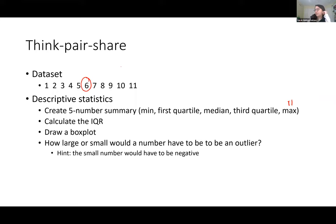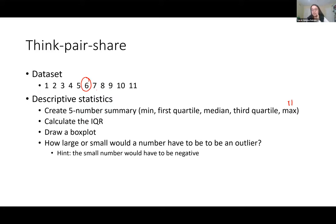We can almost eyeball it here with a data set of this size. If we pick 6, we have 1, 2, 3, 4, 5 below 6 — that's five data points — and then 7, 8, 9, 10, 11 above 6 — that's five data points. So the median perfectly splits the sample into two equally sized data sets. That's how we know it's the median. So our median is 6.